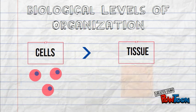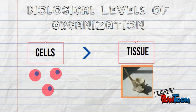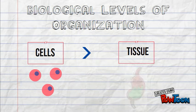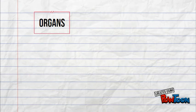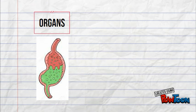Tissues are groups of cells that are similar in what they are and what they do. For example, in your body, you have bone tissue, lung tissue, and stomach tissue. Tissues come together to form our next level of organization. Next we have organs. Organs are made up of tissues that work together to perform a specific function. For example, lung tissue comes together to form your lungs.